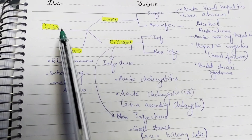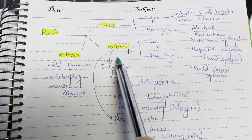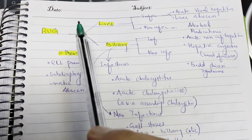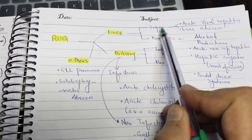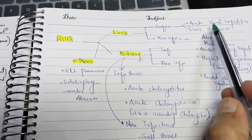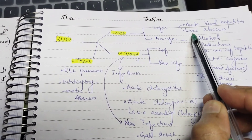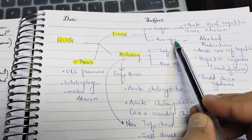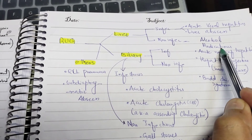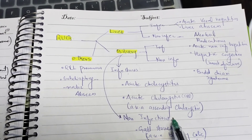If pain is in the right upper quadrant, we divide the differentials into three categories: liver, biliary colic, and others. For liver, we subdivide into infectious and non-infectious. Infectious causes include acute viral hepatitis and liver abscess. Non-infectious causes include acute hepatitis due to alcohol and medications.